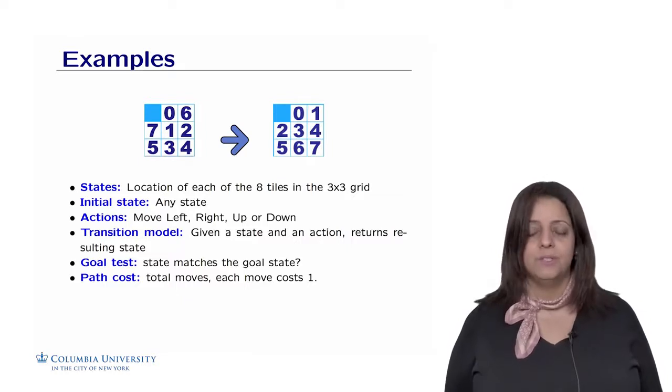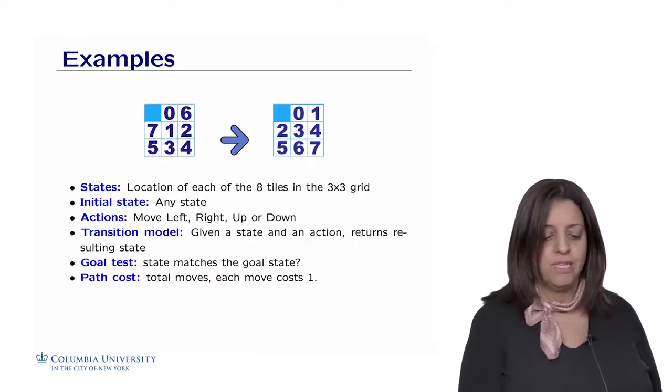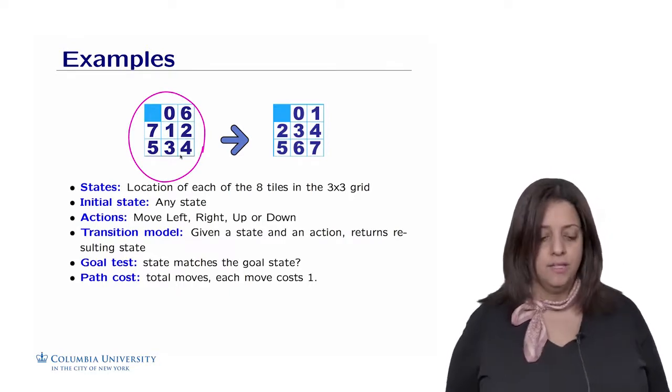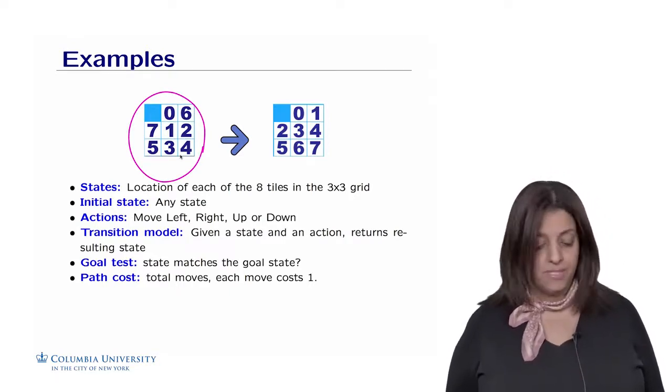The initial state is any state we want to start with. So this is a possibility of an initial state in which we have this configuration of numbers on the grid, but it could be anywhere we start.